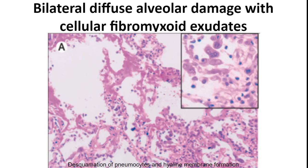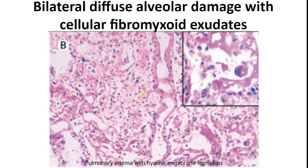On histopathology, we can see typical signs of ARDS: there is diffuse alveolar damage with evidence of pneumocyte desquamation, edema, and hyaline membrane formation. There is also interstitial mononuclear inflammatory cell infiltration and the formation of syncytial cells, which coronaviruses are known to induce. Here is a second image demonstrating the edema, the inflammatory cell infiltrates, and some of the hyaline membranes.